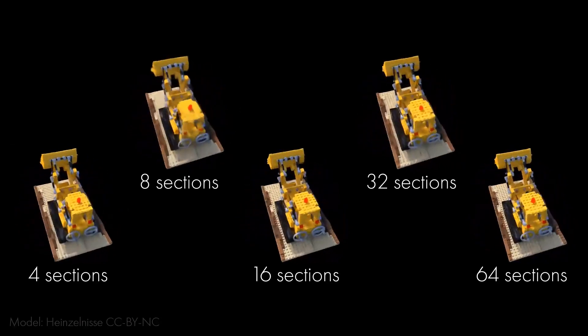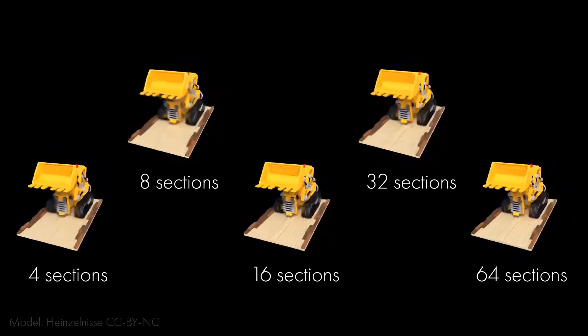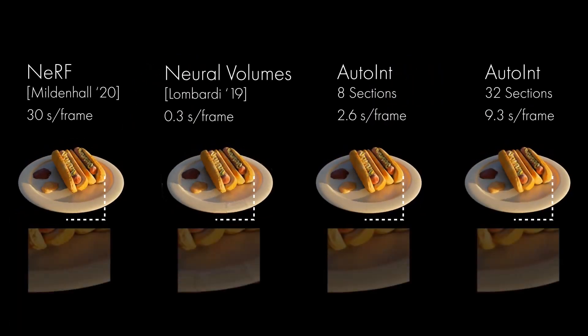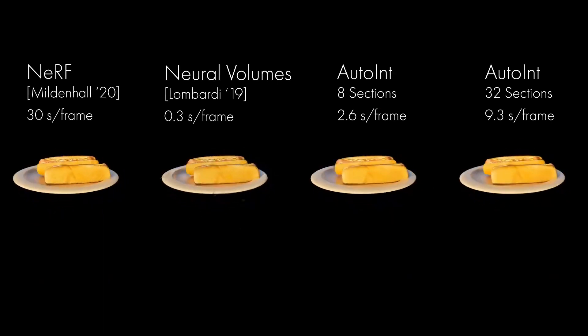We achieve better image quality with more sections, but faster render times with fewer sections. AutoInt achieves high image quality on these synthetic test set views while reducing render times by more than 10 times relative to NeRF.